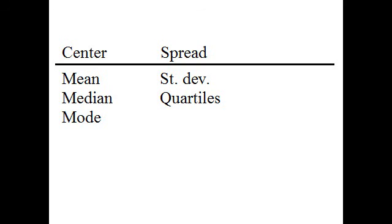In summary, if we're going to use the mean as the measure of center, then we probably also want to use the standard deviation as the measure of spread. If we're going to use the median as the measure of center, then we would probably want to use the quartiles as the measure of spread. There is nothing analogous to the mode when it comes to measuring spread.